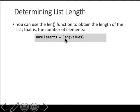So what's happening here? Values is defined as a list. When you say len of values, it will go find the length of the values list and put it in this variable. So that's what's happening here.